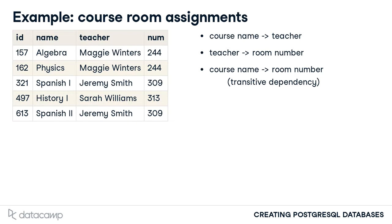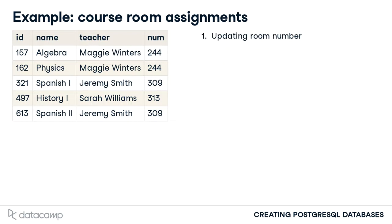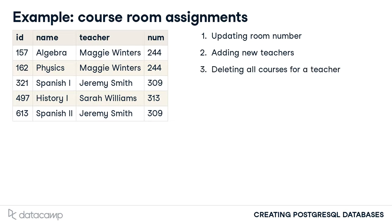You may be wondering what problems such a table structure presents. There are a few. This table design requires changing multiple rows to update a teacher's room number. Structuring a table in this way does not allow new teachers to be added to our database unless an associated course is assigned to that teacher. If all of the teacher's courses are deleted from the table, we no longer have information on the teacher, specifically her name and room number.